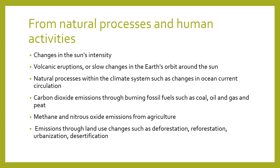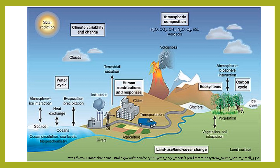Why does climate change happen? It comes from natural processes and human activities. Natural processes include changes in the sun's intensity, volcanic eruptions, slow changes in the Earth's orbit, and changes in ocean current circulation. Human activities include carbon dioxide emissions through burning fossil fuels such as coal, oil, gas, and peat; methane and nitrous oxide emissions from agriculture; and land use changes such as deforestation, reforestation, and urbanization.